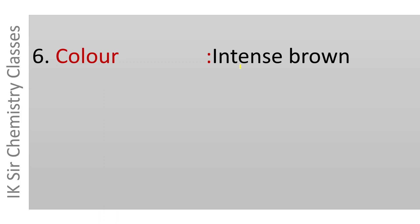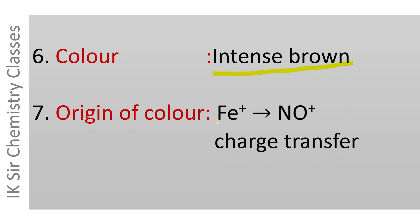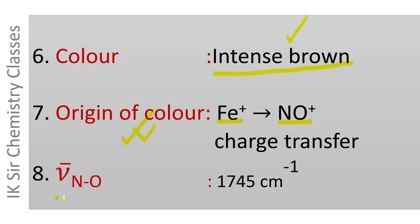The color of the brown ring complex is intense brown, and the origin of its color is Fe+ to NO+ charge transfer, which is why the intensity of the color is high. The nitrogen-oxygen stretching frequency in the brown ring complex is 1745 cm⁻¹. These are the characteristic features of the brown ring complex, and questions related to the ring test for nitrate ion are asked frequently in various examinations.